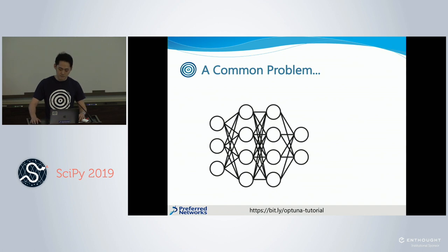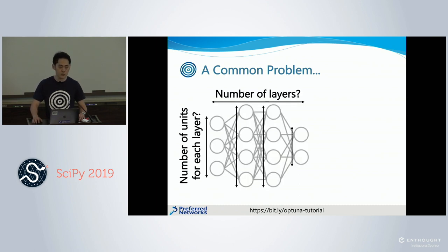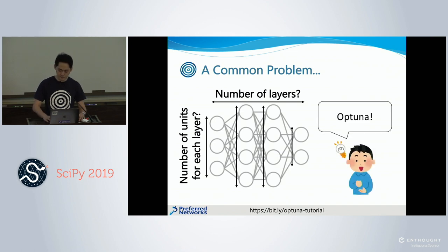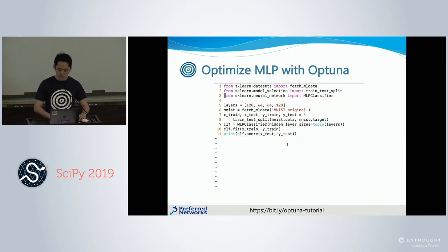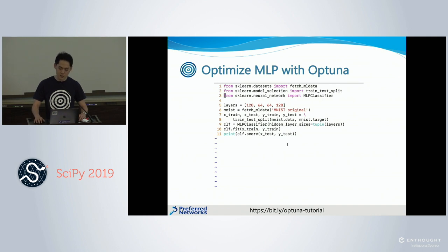Next, let's see a machine learning example with a common problem in neural networks, where we want to optimize the number of layers and the number of units for each layer in a multi-layer perceptron. This is the machine learning logic with the scikit-learn library, without hyperparameter optimization applied yet. Currently the script downloads the MNIST data, splits it into training and evaluation sets, trains the model, evaluates it with the evaluation data, and outputs the evaluation score.